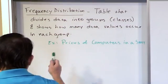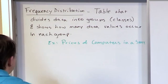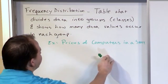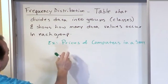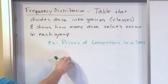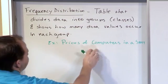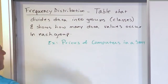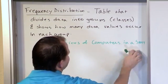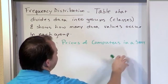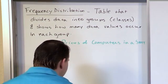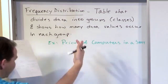So if we were to go look inside a store and figure out how many computers are the cheap ones, how many are the middle-of-the-road ones, and how many types are the upper tier, then we could list all that data.